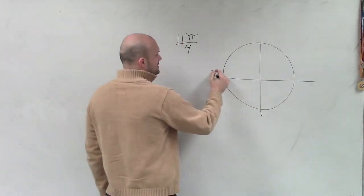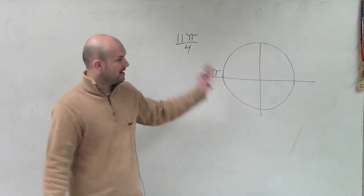If we talked about, remember, halfway around the circle is π. Halfway around the circle is π, all the way around is 2π.